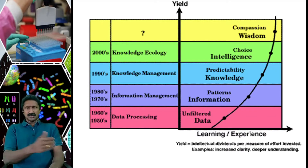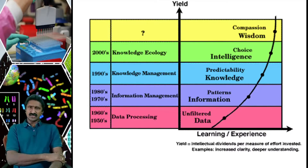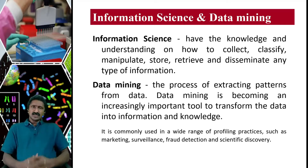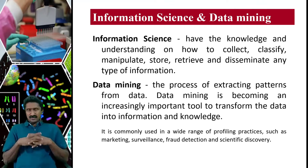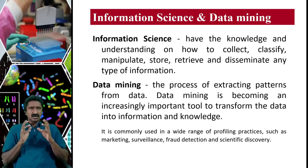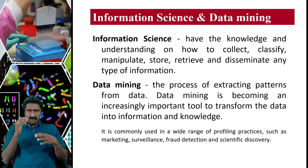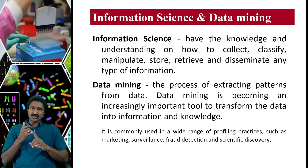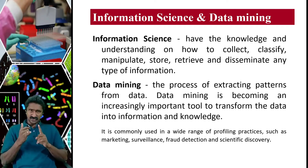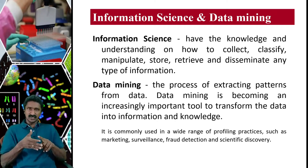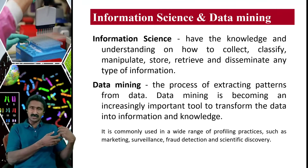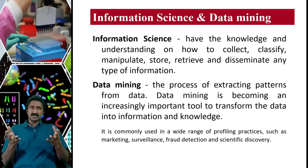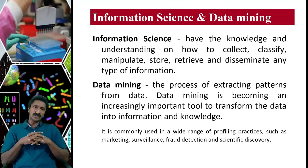This table shows the evolution: in the 1950s–80s we had unfiltered data; in the 1990s, information management systems emerged; then knowledge management systems, knowledge ecology, intelligence, and wisdom followed the same hierarchy. Information science involves the knowledge and understanding of how to collect, classify, manipulate, store, retrieve, and disseminate any type of information. Information science handles data with provisions for collecting, classifying, manipulating, storing, and retrieving it to generate information.